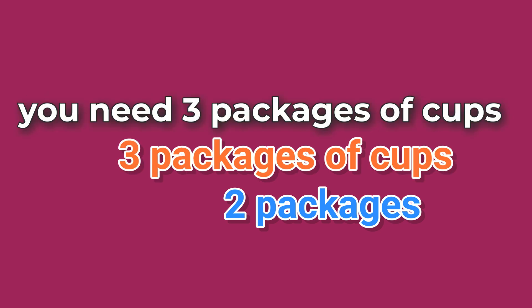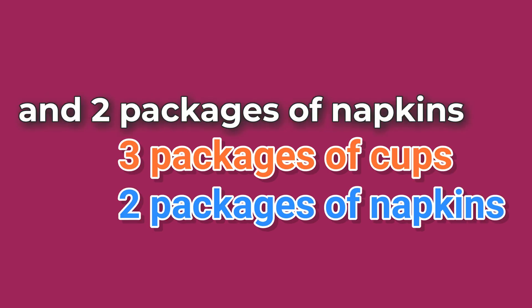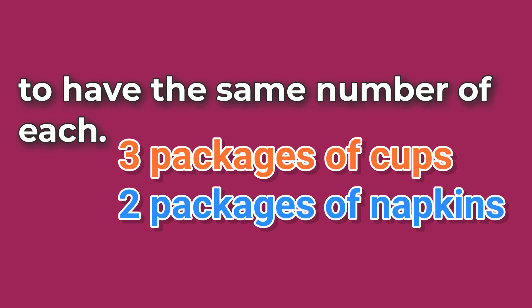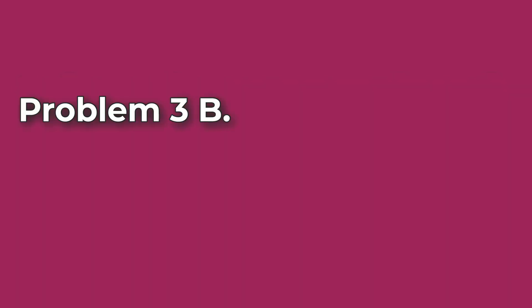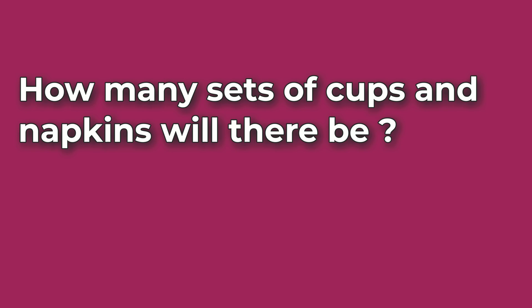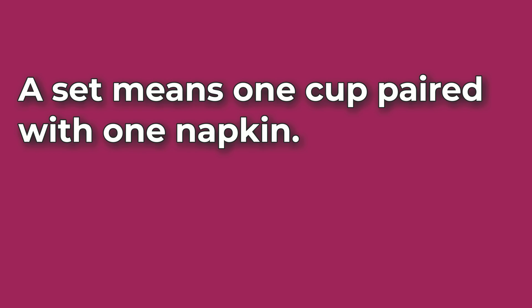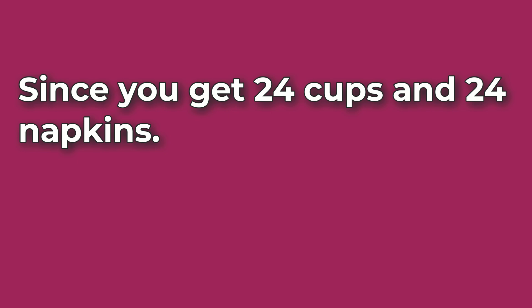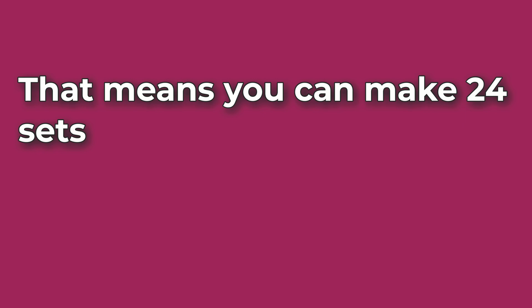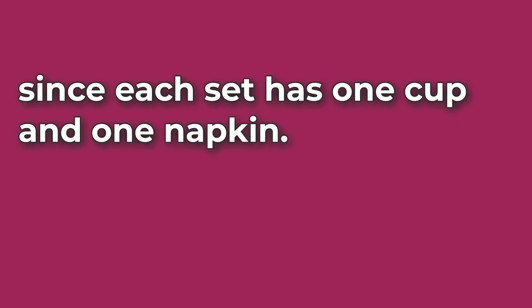So you need 3 packages of cups and 2 packages of napkins to have the same number of each. Problem Number 3B: how many sets of cups and napkins will there be? A set means 1 cup paired with 1 napkin. Since you get 24 cups and 24 napkins, you can make 24 sets, since each set has 1 cup and 1 napkin.